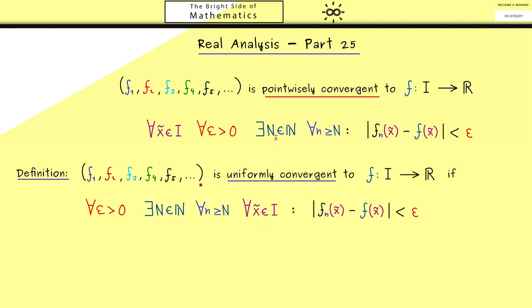Of course, this looks similar, but now this capital N here works uniformly for all points x tilde in I. That's different from before, because here you could choose capital N depending on x tilde. So there could be different capital N's here.